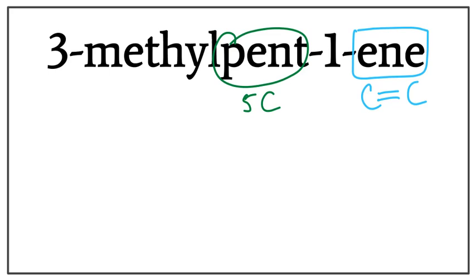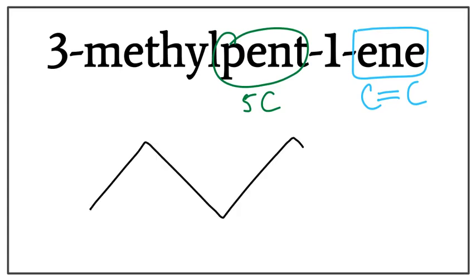Let's draw the 5-carbon chain. A trick to draw this is that you always count till 1 less than the number of carbons you want to draw: 1, 2, 3, 4.